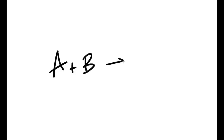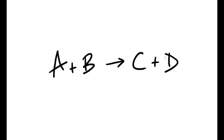Imagine a reaction where A plus B gives you C plus D. This reaction tells us that when one molecule of A reacts with one particle of B, we'll produce one particle of C and one molecule of D. So it's a one-to-one-to-one-to-one reaction.